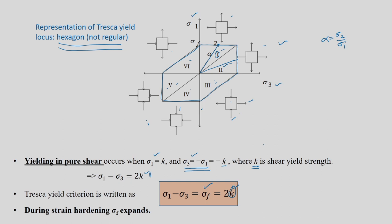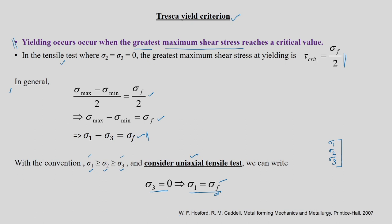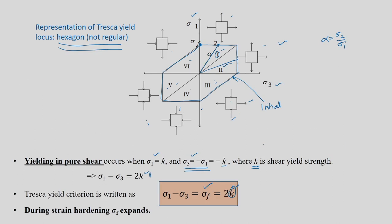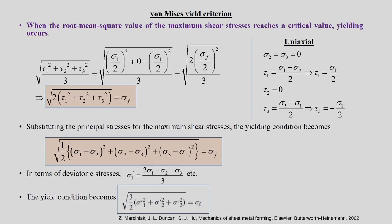During strain hardening, this first yield locus is called the initial yield locus. With further deformation, because of strain hardening, sigma_f increases. When sigma_3 = 0, sigma_1 = sigma_f, which is the uniaxial yield strength. The Tresca yield function briefly tells you when the material is going to start plastically deforming.